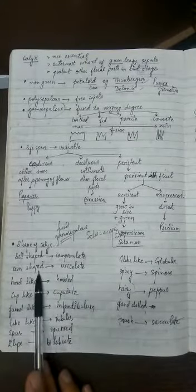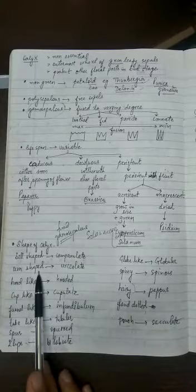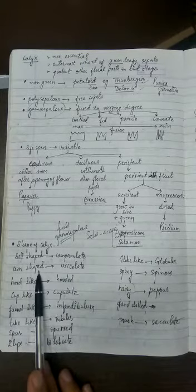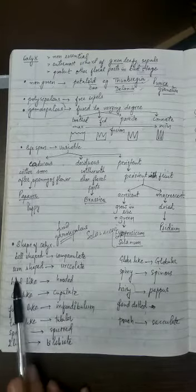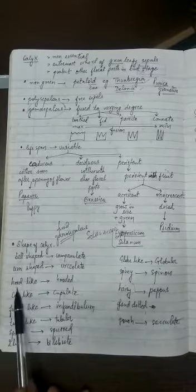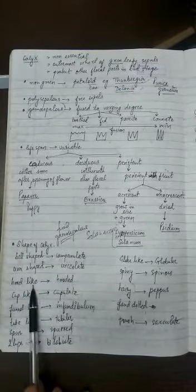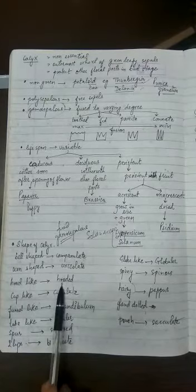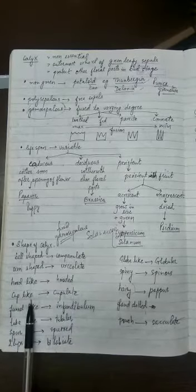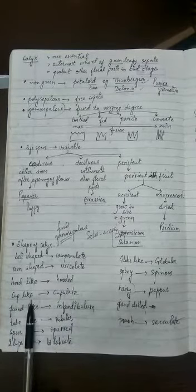The urn shaped is called as the urceolate. Easiest example is Silene or pink, P-I-N-K pink flower. Then we have the hood shape possible. Hood shape is called as the hooded one. Easiest example is Aconitum.